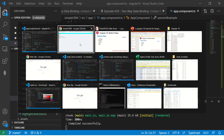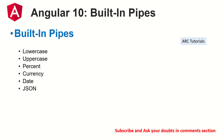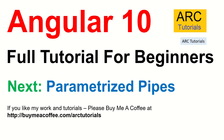That's all the examples of built-in pipes for today. I hope it's clear. I hope after this episode you are now confident with built-in pipes. If you have any doubts, let me know in the comment section — I will be more than happy to help. In the next episode, we will learn about parameterized pipes where you can send parameters to pipes. Join me in the next episode. Please like this video, share it, comment, and subscribe to my channel. Also, if you really like my work, please consider buying me a coffee at buymeacoffee.com/ARCTutorials. Thank you so much for joining — see you in the next episode.